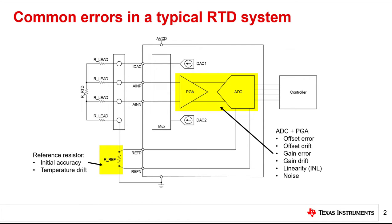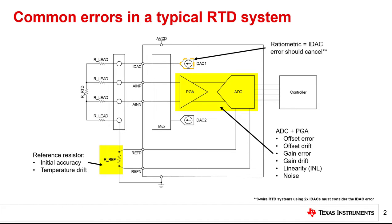The precision resistor used to establish a ratiometric reference voltage can contribute initial accuracy and temperature drift errors. We will assume there is no IDAC error because of the ratiometric reference configuration. However, IDAC mismatch error does need to be considered for three-wire RTD measurement systems using two IDACs. This topic is covered in detail in a previous Precision Labs module discussing challenges with three-wire RTD systems.